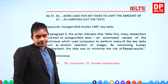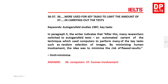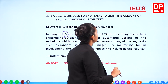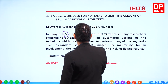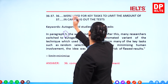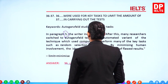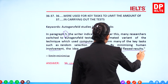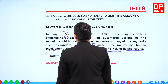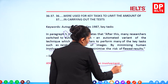Questions 36 and 37: '[Blank] were used for key tasks to limit the amount of [something] in carrying out the test.' In paragraph 5, the writer says many researchers switched to Auto-Gansfeld — an automated variant which used computers to perform key tasks such as random selection of images. By minimizing human involvement, the idea was to minimize the risk of flawed results. So the answers are: 36 — computers, 37 — human involvement.